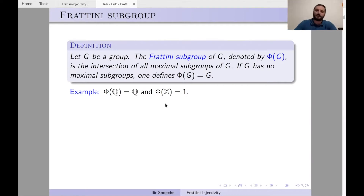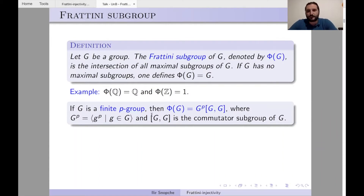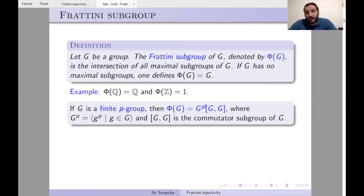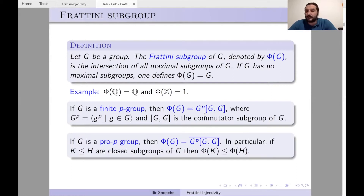In the case of finite p-groups, whenever we have a finite p-group G, Φ(G) = G^p · [G,G], where G^p is the subgroup generated by all p-th powers. The Frattini subgroup plays a key role in the study of p-groups. For pro-p groups, which are inverse limits of finite p-groups, we get a similar formula: Φ(G) is the closure of G^p · [G,G].